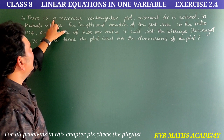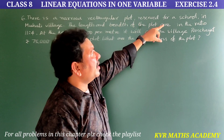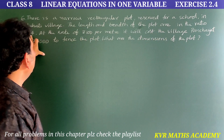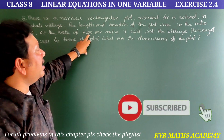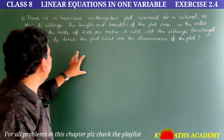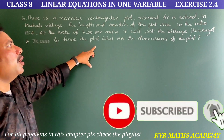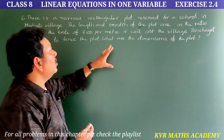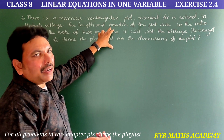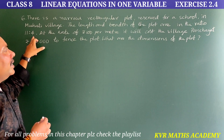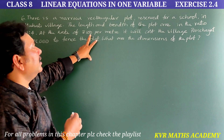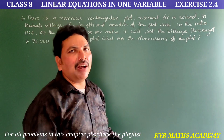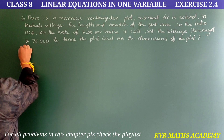Next, the sixth question. There is a narrow rectangular plot reserved for a school in Mohali village. The length and breadth of the plot are in the ratio 11 is to 4. At the rate of rupees 100 per meter, it will cost the village panchayat rupees 75,000 to fence the plot. What are the dimensions of the plot?